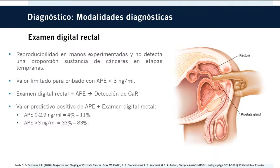En cuanto al examen digital rectal, previo a la disponibilidad del antígeno prostático era el único método de detección temprana. Este examen tiene reproducibilidad limitada incluso en manos experimentadas y no detecta una proporción sustancial de cánceres tempranos. Su valor para el screening es muy limitado con antígenos menores de 3 ng/mL, por lo que la mayoría de los urólogos utilizan de manera conjunta el antígeno prostático y el examen digital rectal.